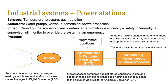Next we're going to look at power stations, which is an industrial system. The sensors could be temperature, pressure, gas, or radiation depending on the scenario. The actuators are going to be water pumps, valves, and automatic shutdown processes, used to make sure that the temperature doesn't go beyond normal operating limits. Power stations are too important to leave entirely in the hands of automated systems, so generally a supervisor will monitor and override the system in an emergency — for example, when things like earthquakes or tsunamis impact power stations and manual shutdowns are needed.